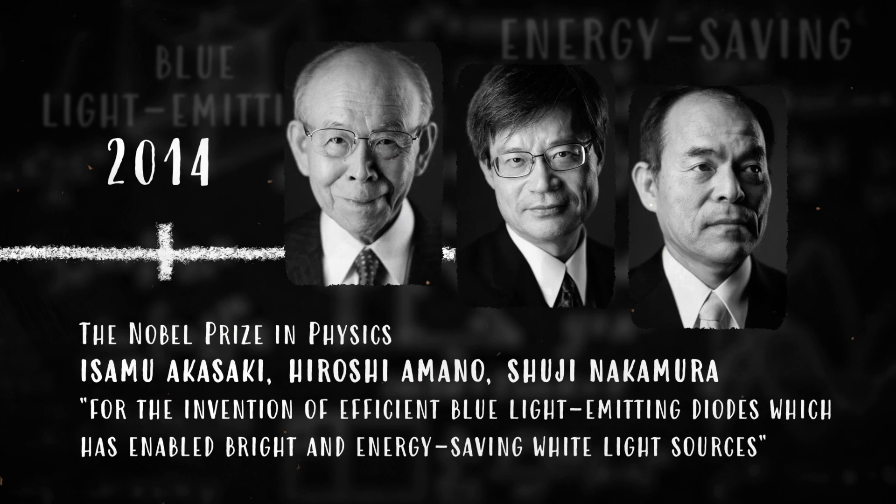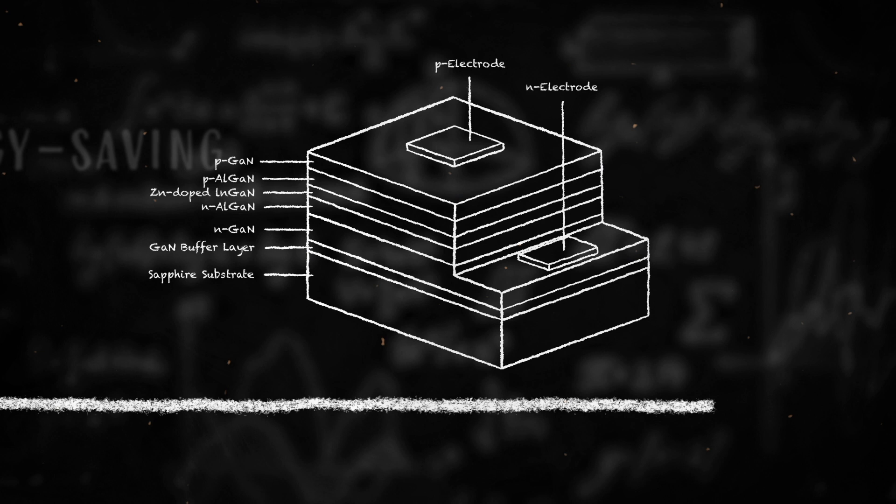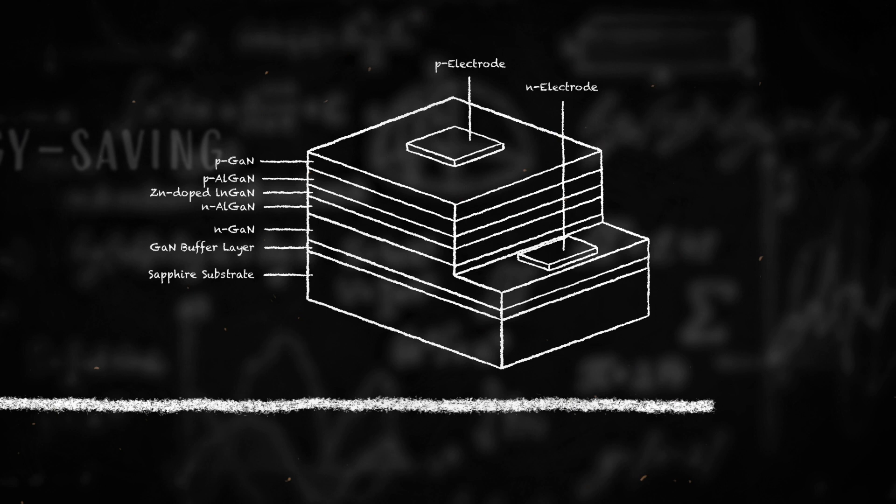Red and green LEDs were developed in the 1950s and 1960s but efficient and powerful blue LEDs remained a challenge for decades. Akasaki, Amano and Nakamura introduced gallium nitride as the key material for blue LEDs.